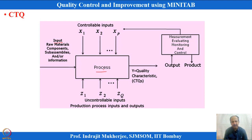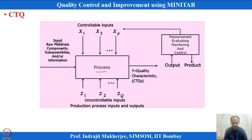When raw material enters the process — like in continuous manufacturing or steel industry — value addition happens, and products emerge as output. Products have characteristics such as strength which are CTQs. CTQ can be strength, elongation, or any other parameter important to the customer coming out of the process.